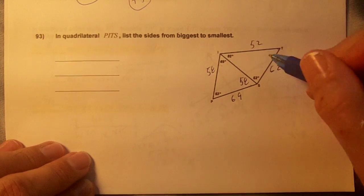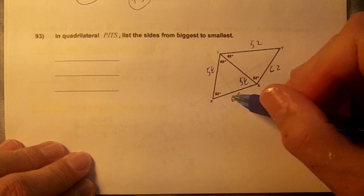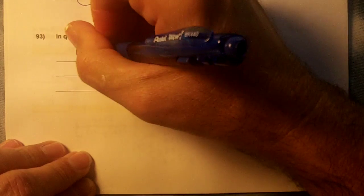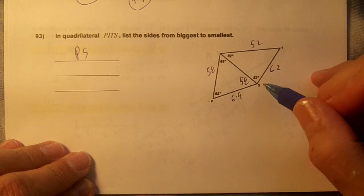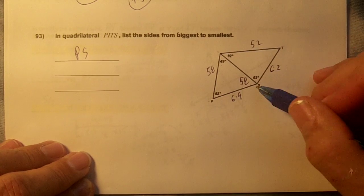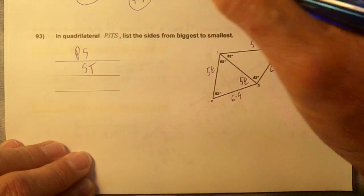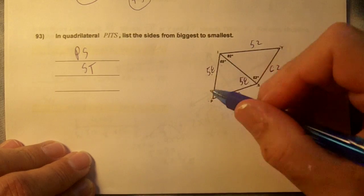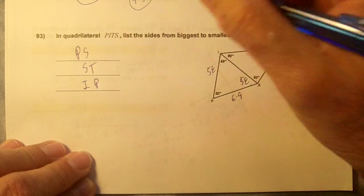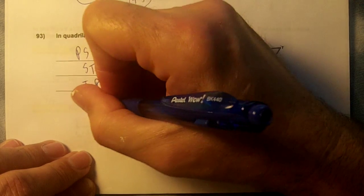So list the sides from biggest to smallest. My biggest side is this one, PS. Okay, the next biggest edge is the 62, which is ST. And then my next biggest edge is here, IP. And then my smallest edge would be this, IT.